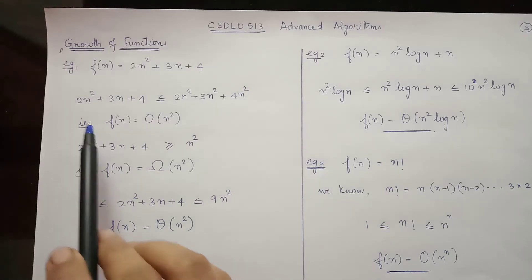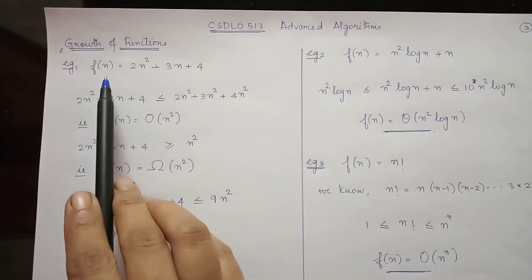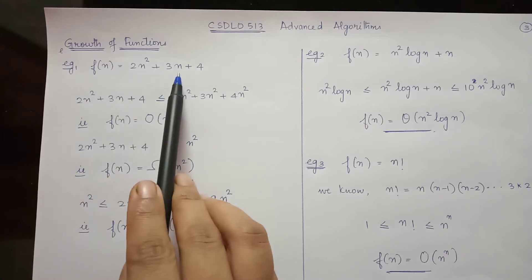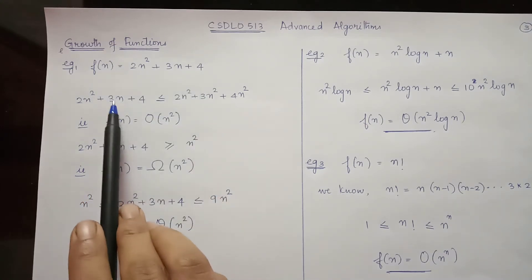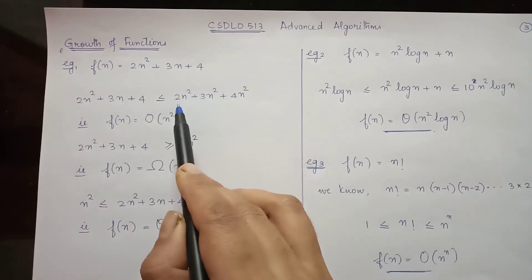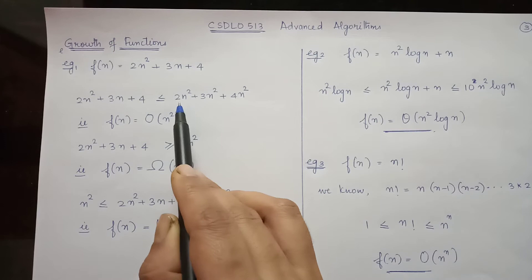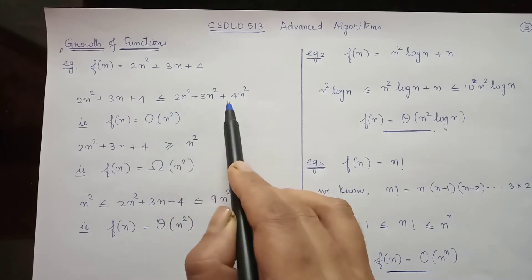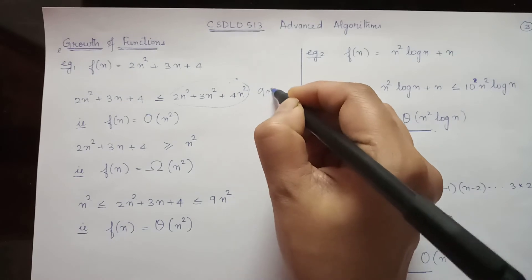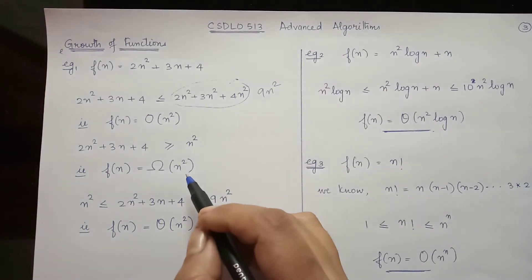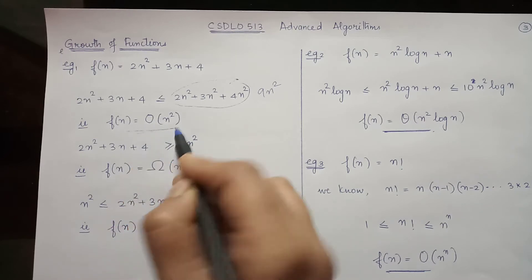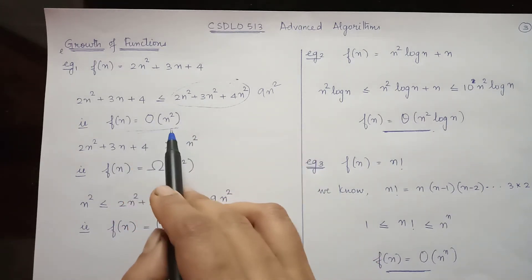Consider the example where f(n) = 2n² + 3n + 4. We can write the upper bound of this function as 2n² + 3n² + 4n², which is in effect 9n². So here f(n) can be represented as Big-O of n².